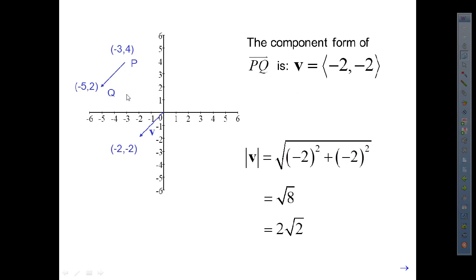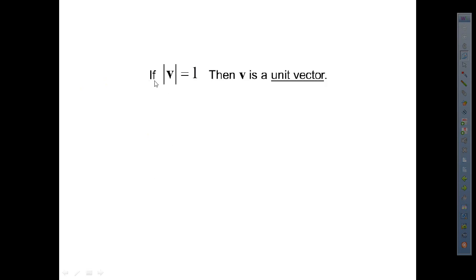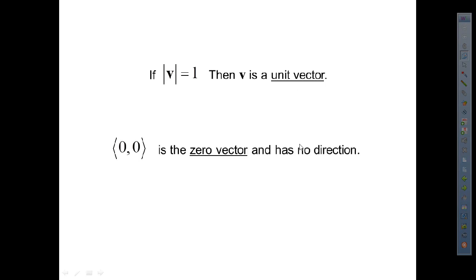Remember, the vector can be anywhere in the plane, but it's in standard form when we have it coming from the origin. If the magnitude of v equals 1, then vector v is a unit vector. If we have the vector (0, 0), that is the zero vector and it has no direction and no magnitude.